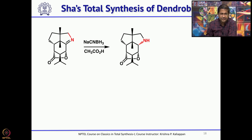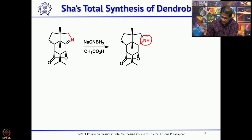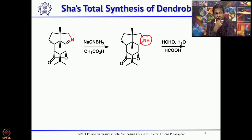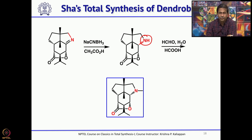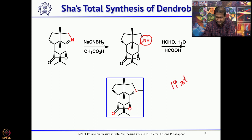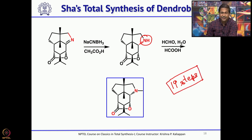What is left in the total synthesis of dendrobine is to methylate the NH. If you treat with formaldehyde and formic acid, you can easily methylate the NH to get the corresponding N-methyl group. This is the second total synthesis of dendrobine, which took about 19 steps starting with the commercially available monoterpene called carvone.